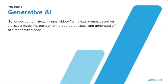So let's talk about generative AI. For those who don't know the term, it's the thing that generates content — text, images, and video from a text prompt — based on a statistical modelling system trained from prepared data sets, generated off a randomised seed. It's really important to understand that it's statistical modelling, so it will always predict based on what has already been seen. If you give it a new problem that has never been statistically encountered before, it won't be able to give you an accurate answer.